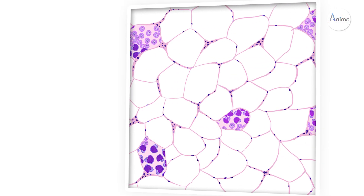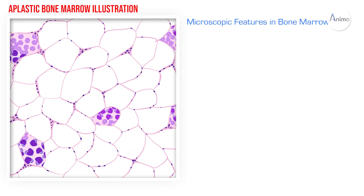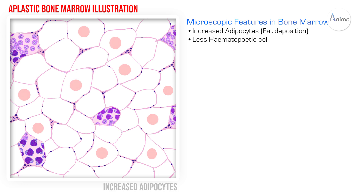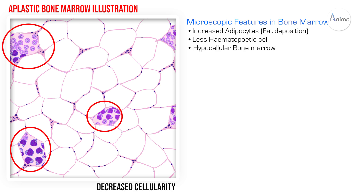Now let's see the histological illustration of aplastic bone marrow. Here you see there is an increased number of adipocytes and the hematopoietic cells become less, so there is decreased cellularity. This results in fewer hematopoietic stem cells, causing a low reticulocyte count, which leads to anemia as the production of RBCs is decreased in the bone marrow.